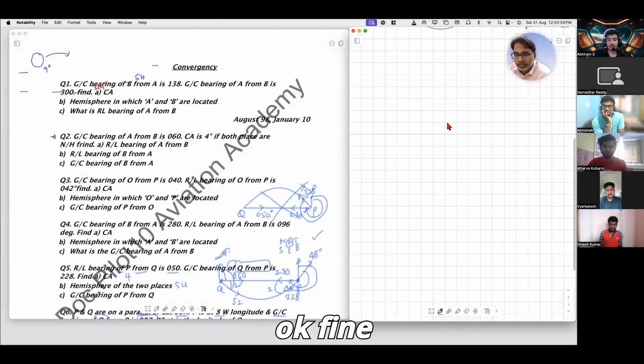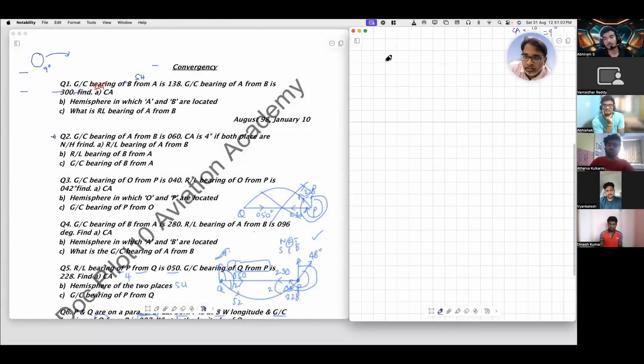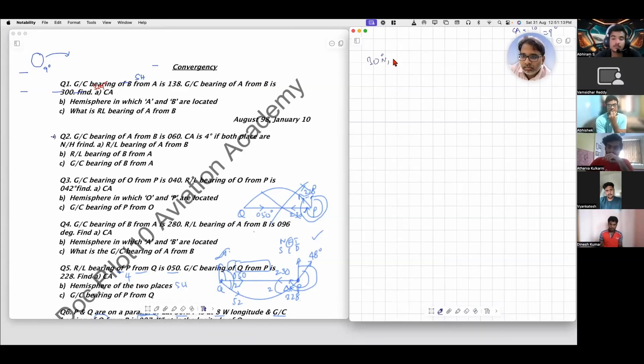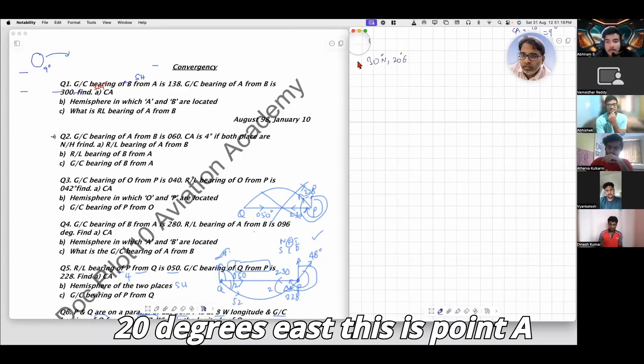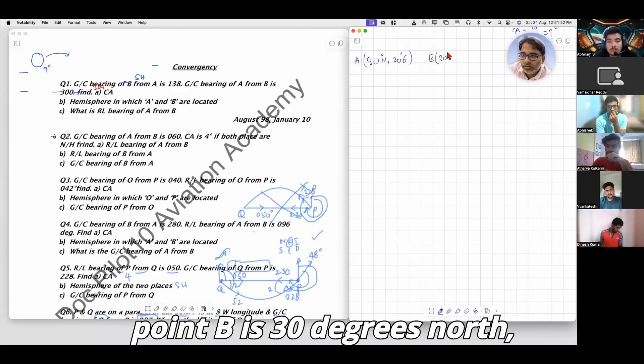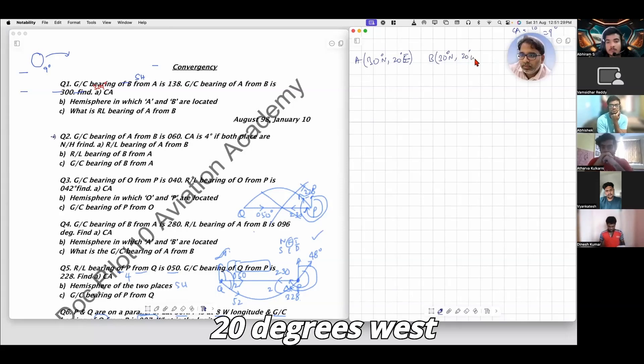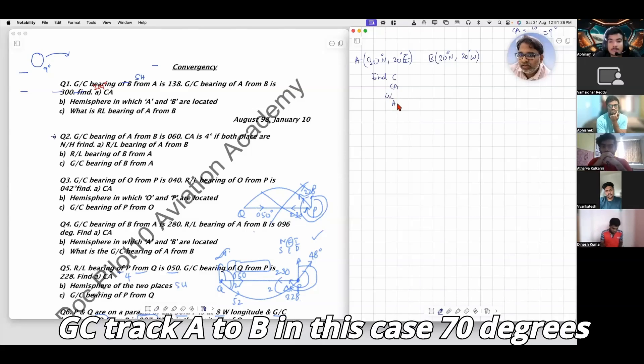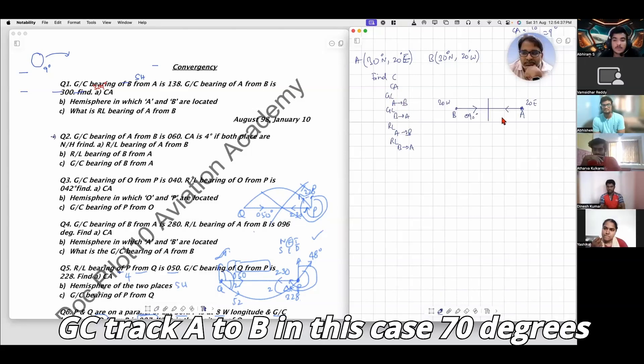Let's take two points: 30 degrees north 20 degrees east - this is point A. Point B is 30 degrees north 20 degrees west. Find convergency, conversion angle, and GC track A to B. The GC track is 270 degrees.